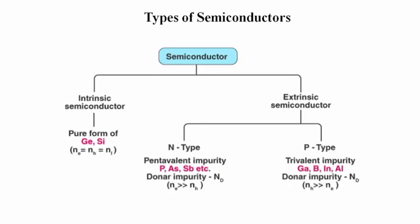There are two types of semiconductor: one is pure or intrinsic semiconductor, and another is extrinsic or impure semiconductor. Extrinsic semiconductors are divided into two parts: N-type material, where pentavalent impurity such as phosphorus, arsenic, or antimony is doped into the semiconductor, and P-type material, where trivalent impurities such as gallium, boron, indium, or aluminium are doped. In N-type material, the majority carriers are electrons, and in P-type, the majority charge carriers are holes.